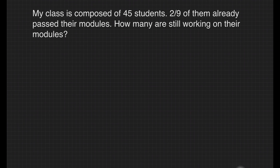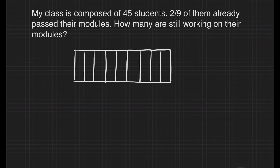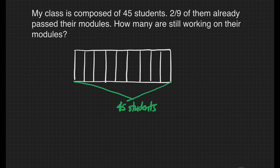Let's start illustrating the models. Let's have first one box. The box should be divided into nine equal parts and I have a total of 45 students. Let's label that. To find the value of each box, we will just divide 45 by 9. The answer would be 5 — it means in each box we'll have 5 students. Let's write the 5 in each box.